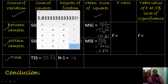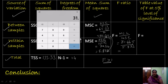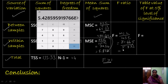We calculate the value of F, for which the resulting value should be greater than 1. Looking at the two values — MSC is 31.665 and MSE is 5.833 — MSC has the greatest value. So F equals MSC over MSE, which is 31.665 over 5.833 equals 5.43. This is our calculated value of F.